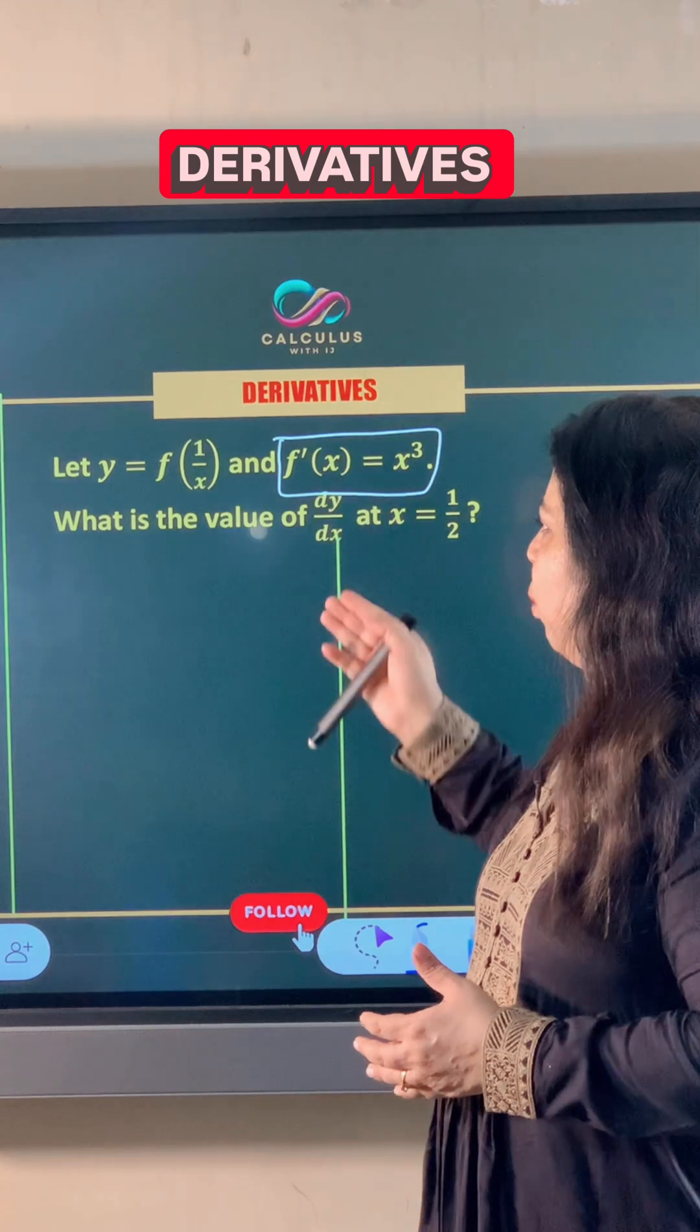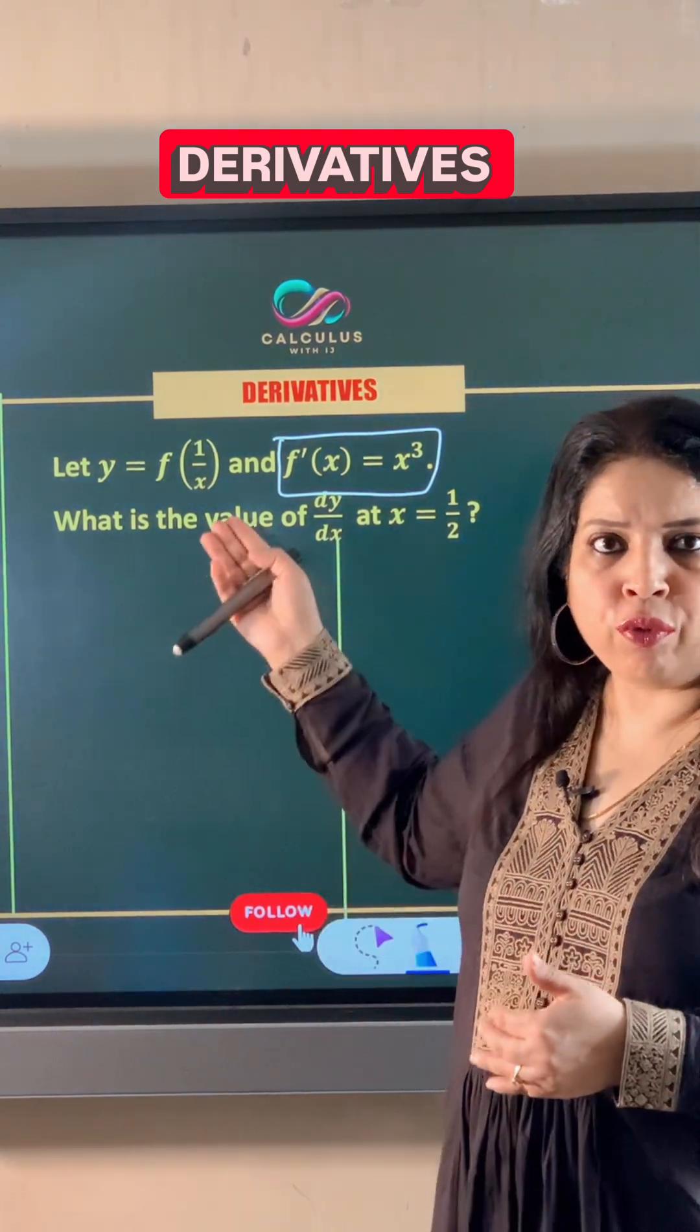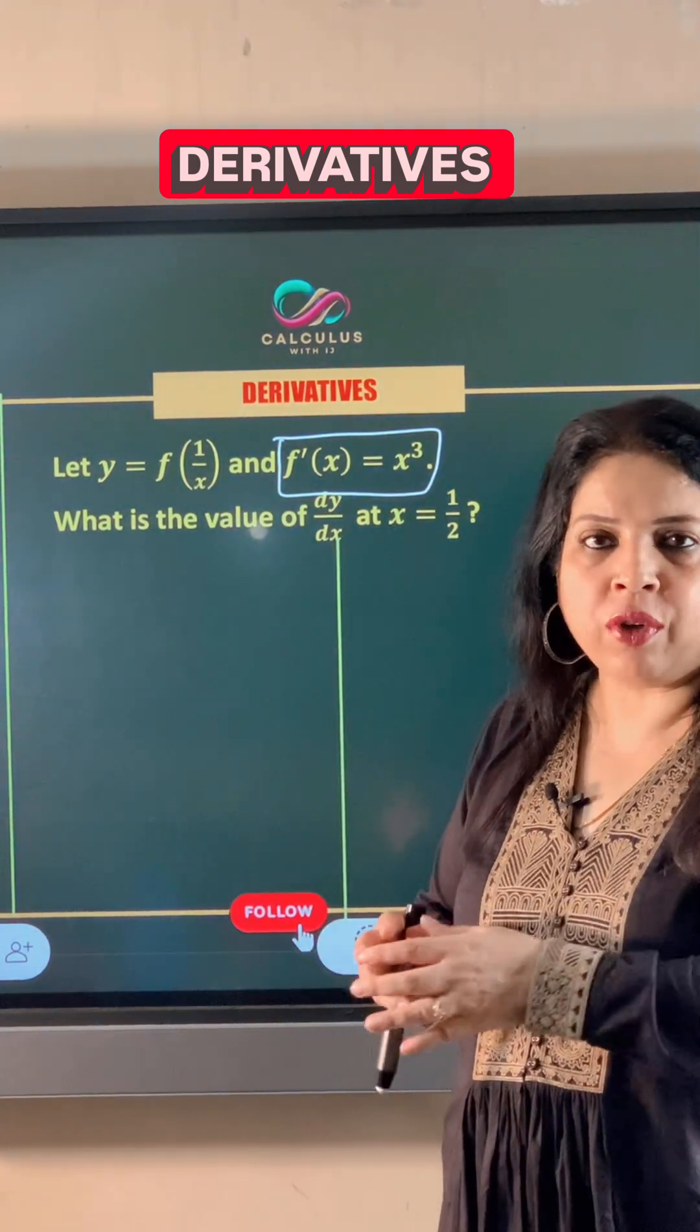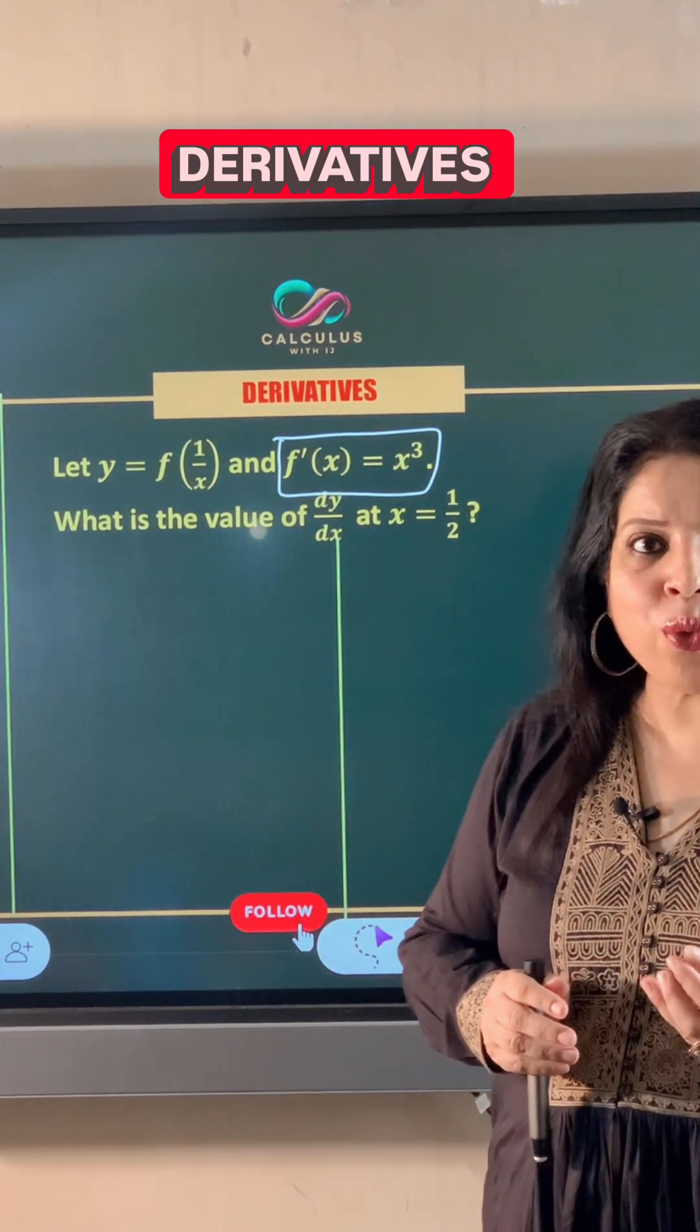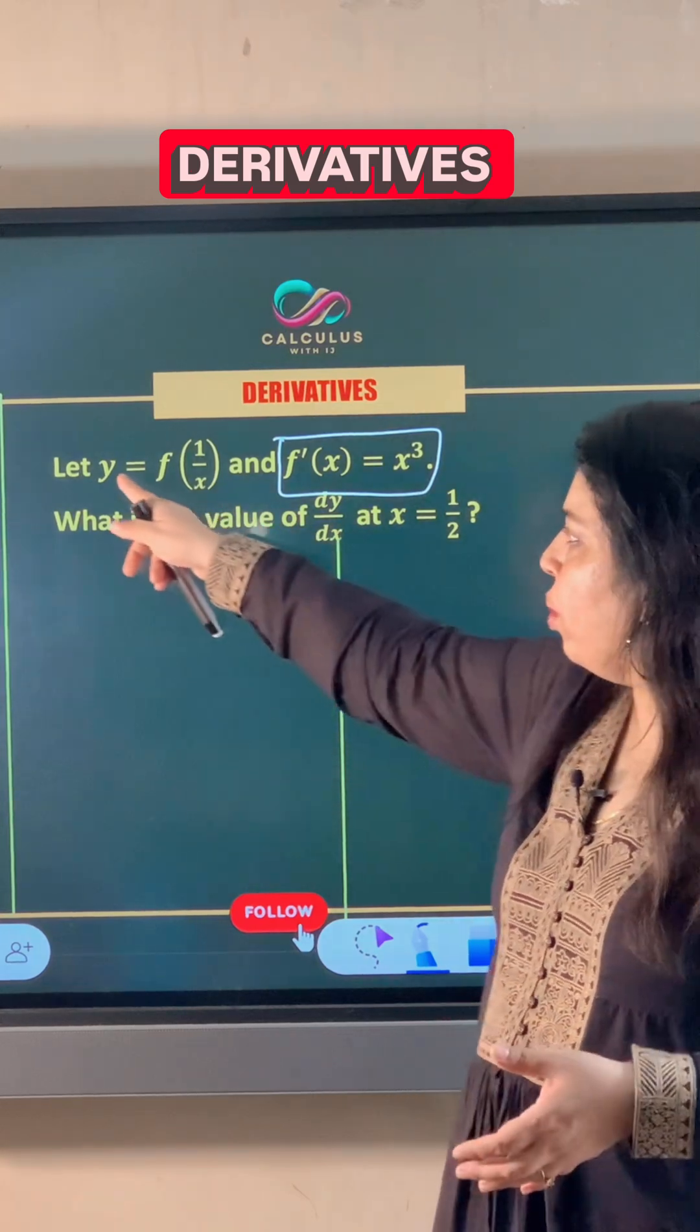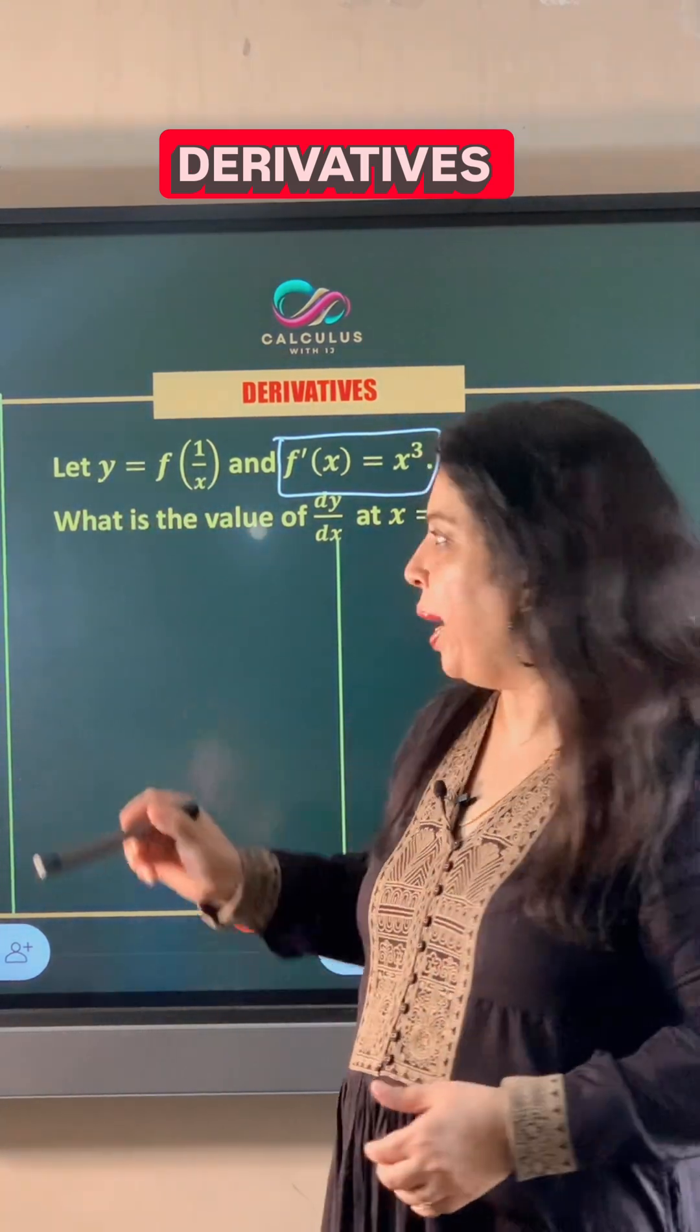We have to find the value of the first order derivative of y with respect to x, that is dy/dx at x equals 1/2. So let's start the question by finding the value of the first order derivative of y with respect to x.